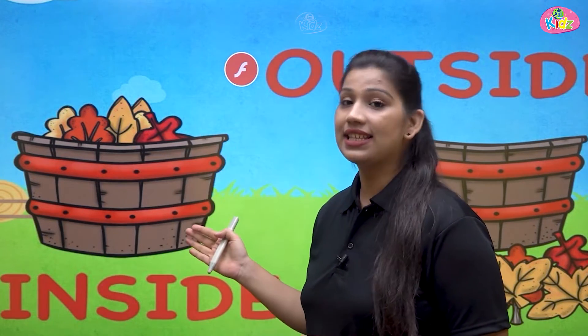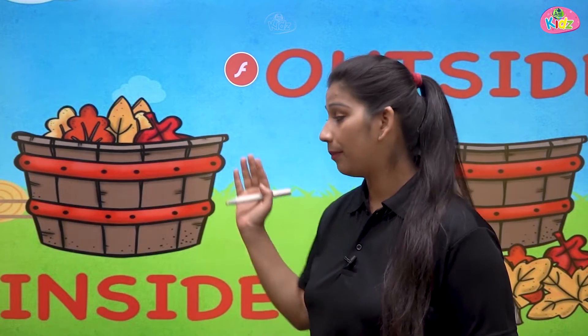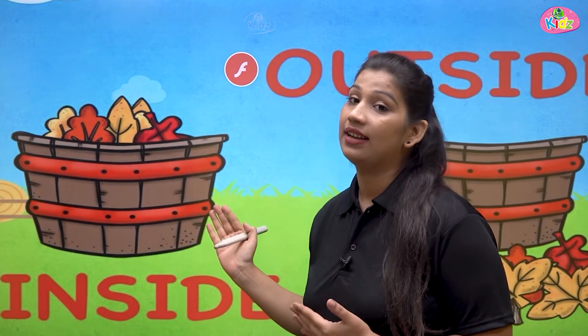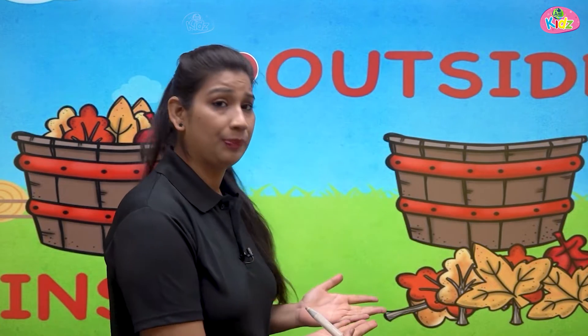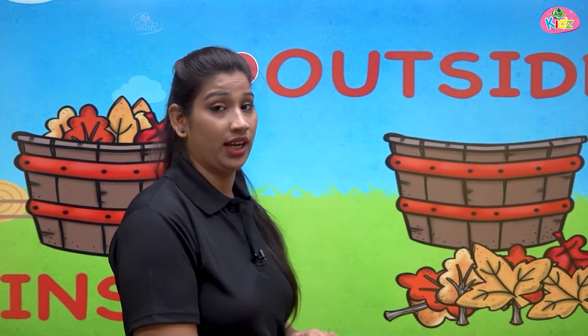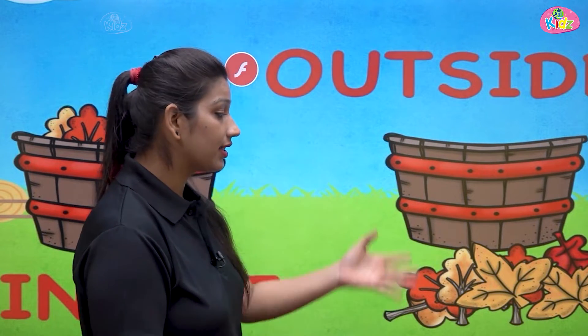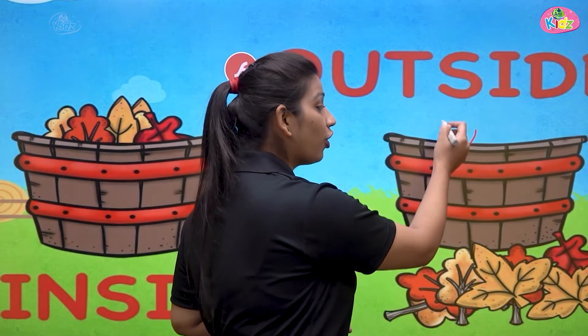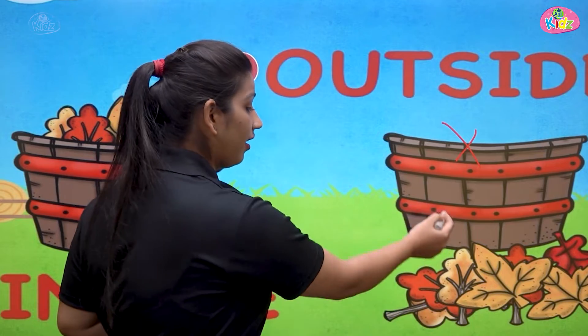Can you identify which is inside and which is outside? Yes. Here, leaves are inside the bucket. Saari ke saari leaves bucket ke under hain — andar matlab inside. But here, you can see all of the leaves are outside the bucket — bucket ke baahar hai, andar nahi hai. The leaves are not inside, they are outside.